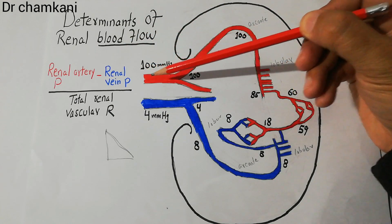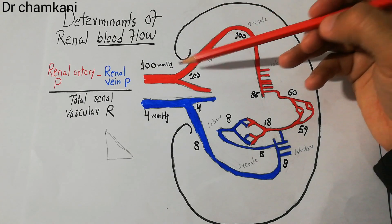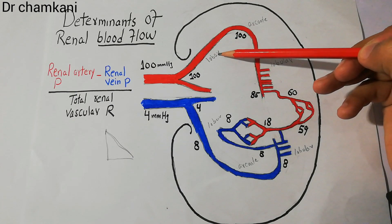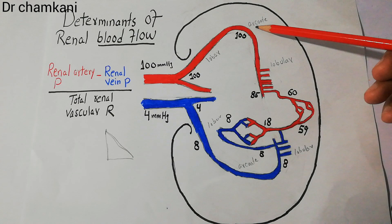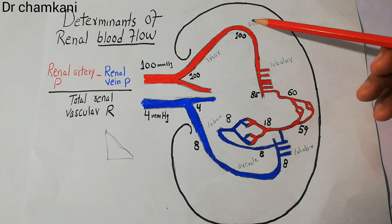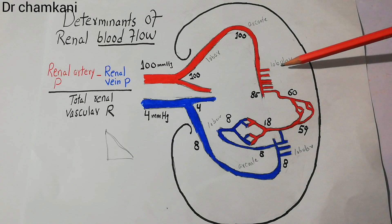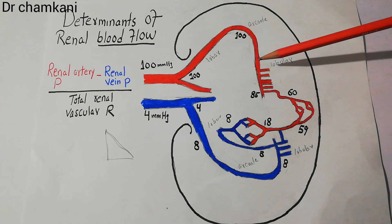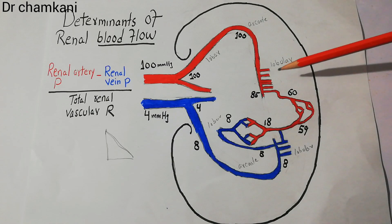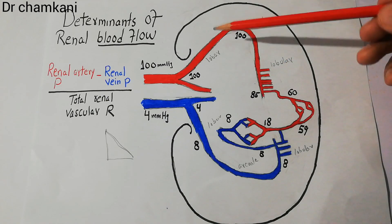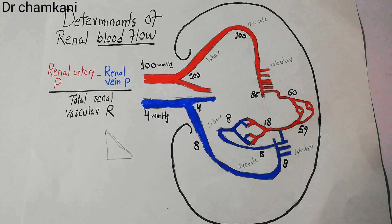When blood starts flowing into the kidney, its pressure is around 100 mmHg, almost equal to systemic arterial pressure. It then enters the interlobar arteries, where pressure remains around 100 mmHg, then into the arcuate arteries, also around 100 mmHg, and then into the interlobular arteries, where pressure starts at around 100 mmHg. A slight decrease may occur in the interlobar and arcuate arteries, but it remains near 100 mmHg with minimal drop.